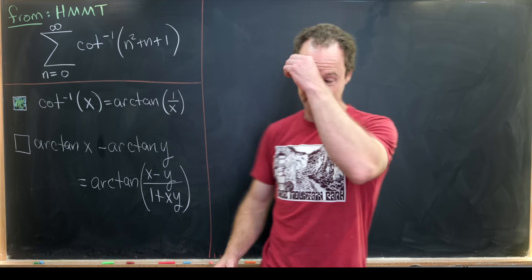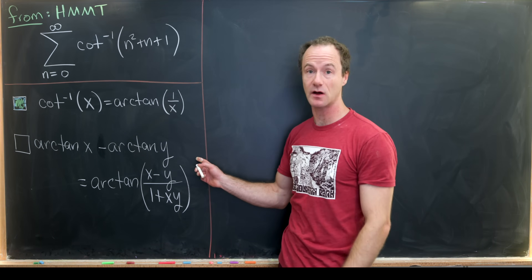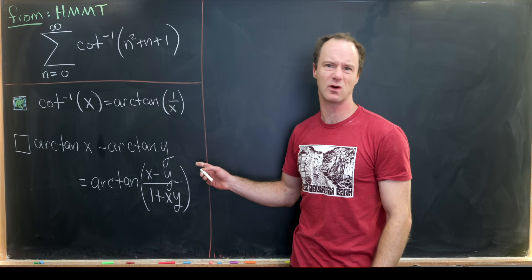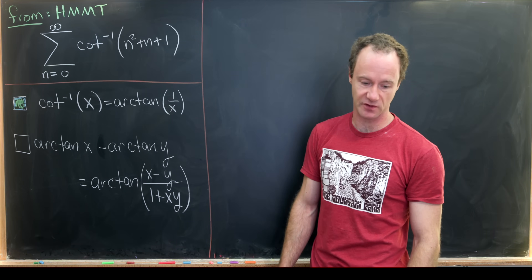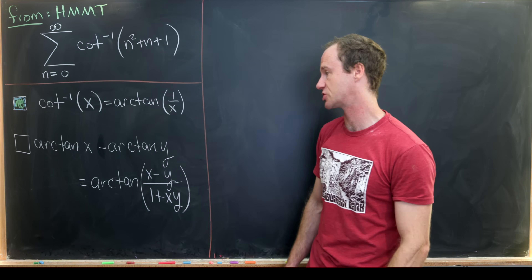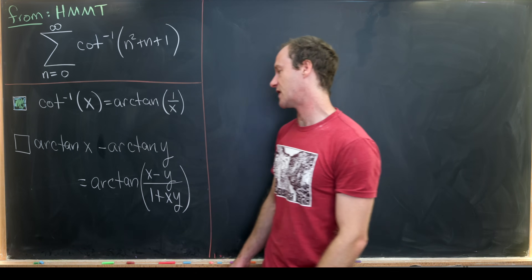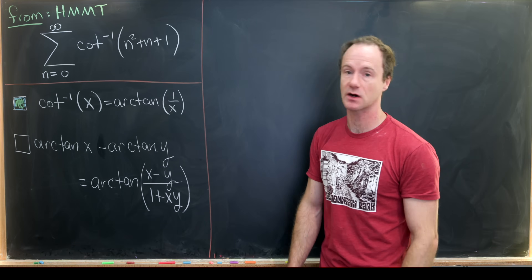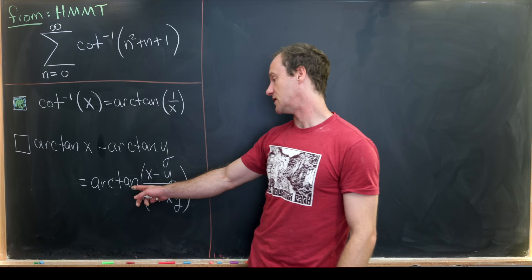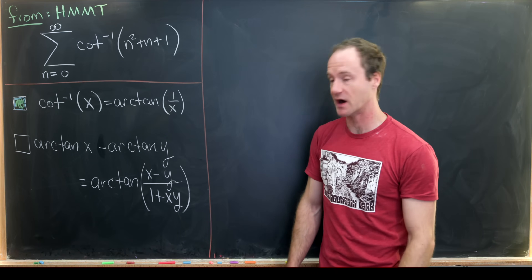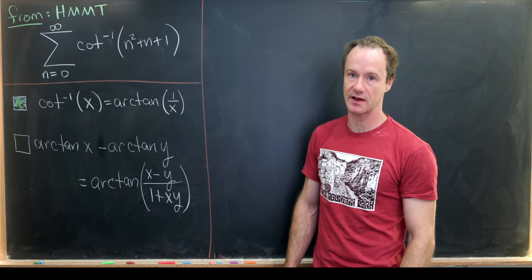Now let's move on to the second tool, which is a difference formula for the inverse tangent function. We have: arctan(x) minus arctan(y) equals arctan of (x minus y) over (one plus xy).